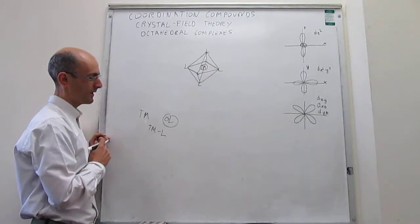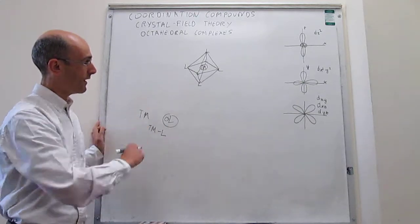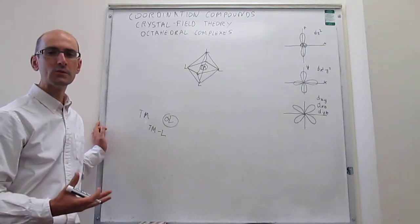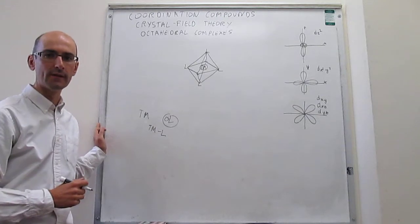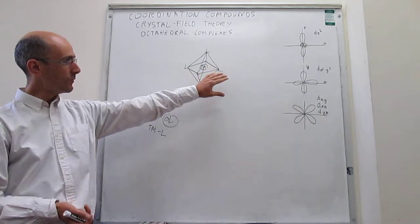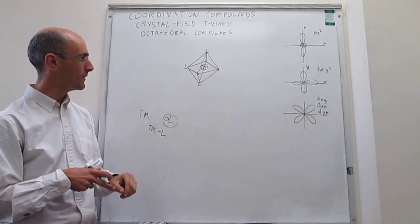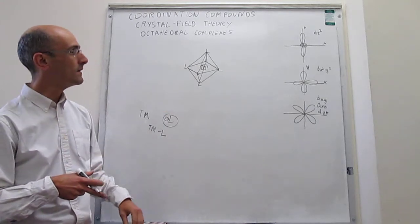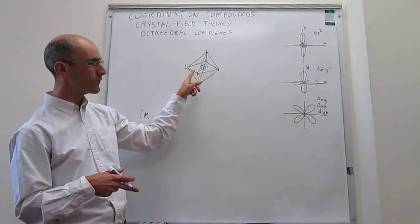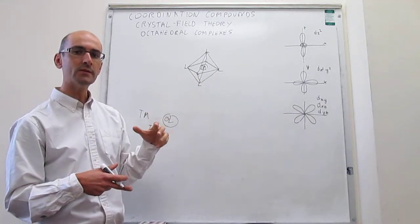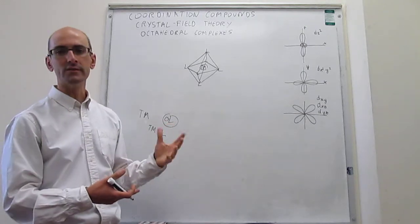Because the ligands always have lone pairs that participate in the bonding, a good approximation is to assume that those ligands act as negative charges — due to those lone pairs of electrons. So what we have is the transition metal with its d orbitals, and now six negative charges at the vertices of the octahedron. It is easy to see that the dz² and dx²-y² orbitals, because they point right along the ligands, are going to experience repulsion from the electrons of those negative charges, and their energy is going to go up.